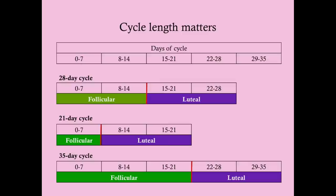If she has a 28-day cycle, she ovulates on day 14. If she has a 21-day cycle, she ovulates at day 7 — and that impacts how well you can apply Naegele's rule. Naegele's rule assumes a 28-day cycle. If she has a 23-day cycle, subtract 5 days from the due date; if she has a 35-day cycle, add 7 days, because she became pregnant later than Naegele's rule assumes.